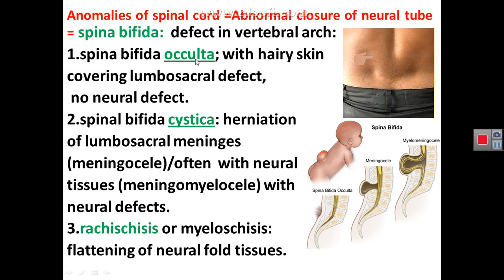Spina bifida occulta means hidden — we cannot see a defect externally, but an X-ray reveals a deficient vertebral arch in the lumbosacral region. The patient has no neuronal defect and functions normally in motor and sensory terms. Spina bifida cystica involves a cyst on the back in the lumbosacral region due to herniation of the meninges, called meningocele, or herniation of meninges with neural tissue, called meningomyelocele. Meningomyelocele is associated with motor or sensory defects.